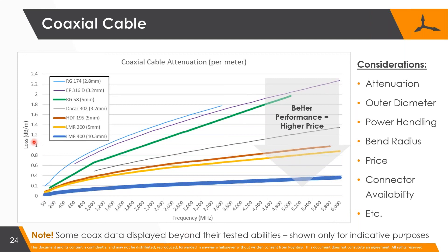Look at the distance - is it relevant? Over half a meter, perhaps 0.2 to 0.4 dB loss is not relevant, but if you're going to use 10 meters then that's becoming 4 dB, or even 6 dB. And of course consider the frequency at which you wish to operate.